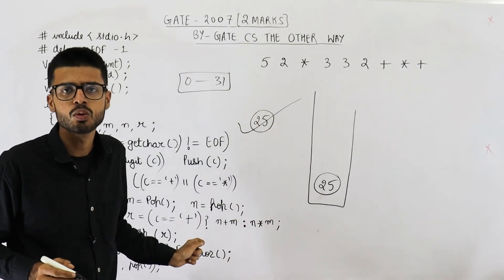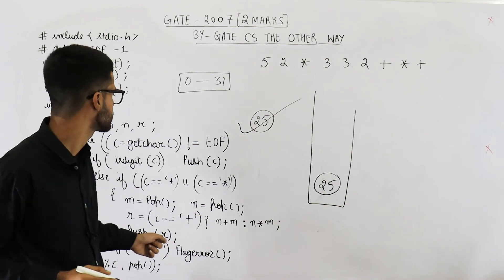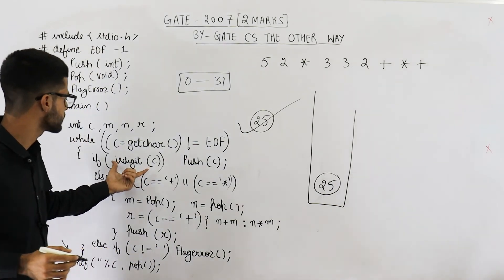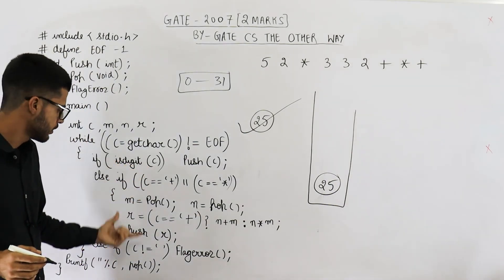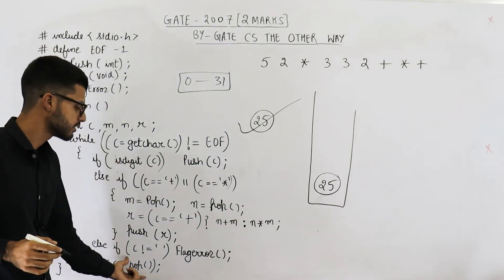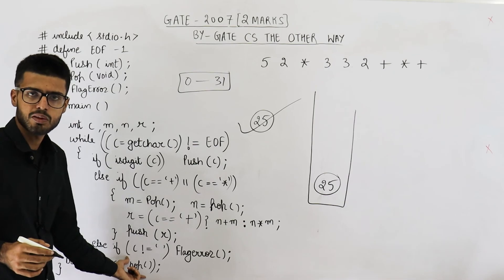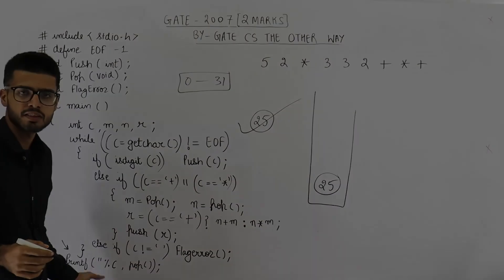So 25 is the answer to this question if we ignore small points such as the missing header file include or the fact that pop returns an integer being printed as a character.